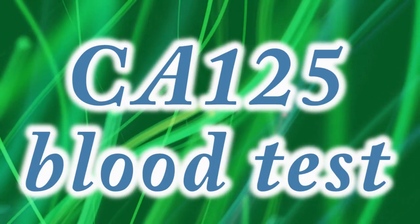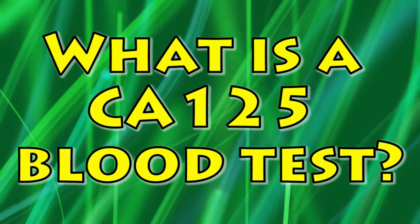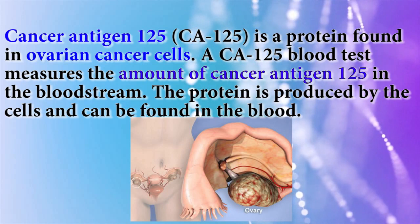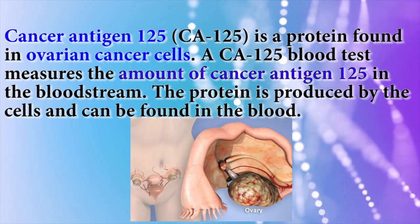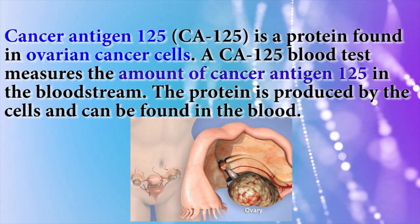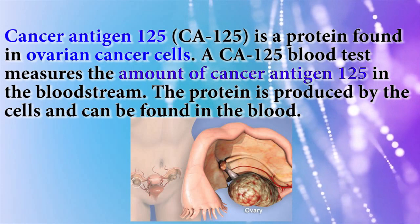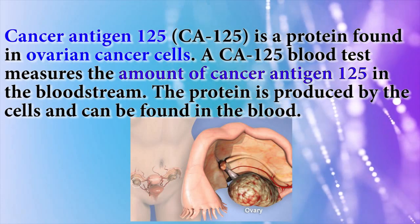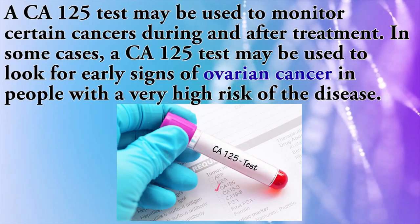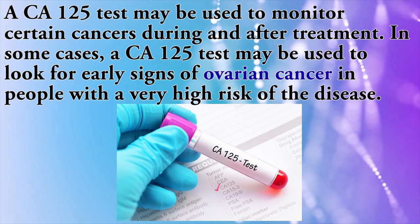This video is about the CA-125 blood test. Cancer antigen 125 is a protein found in ovarian cancer cells. A CA-125 blood test measures the amount of cancer antigen 125 in the bloodstream. The protein is produced by the cells and can be found in the blood. A CA-125 test may be used to monitor certain cancers during and after treatment.